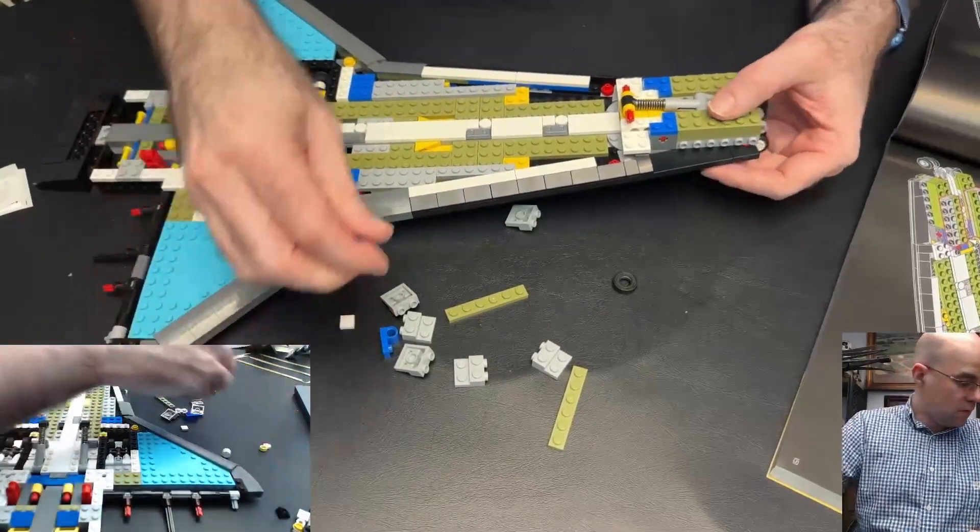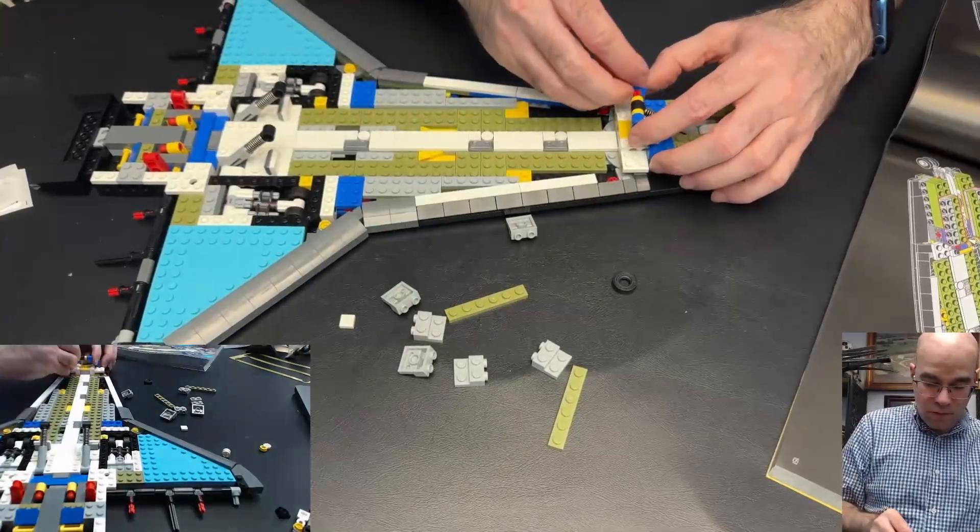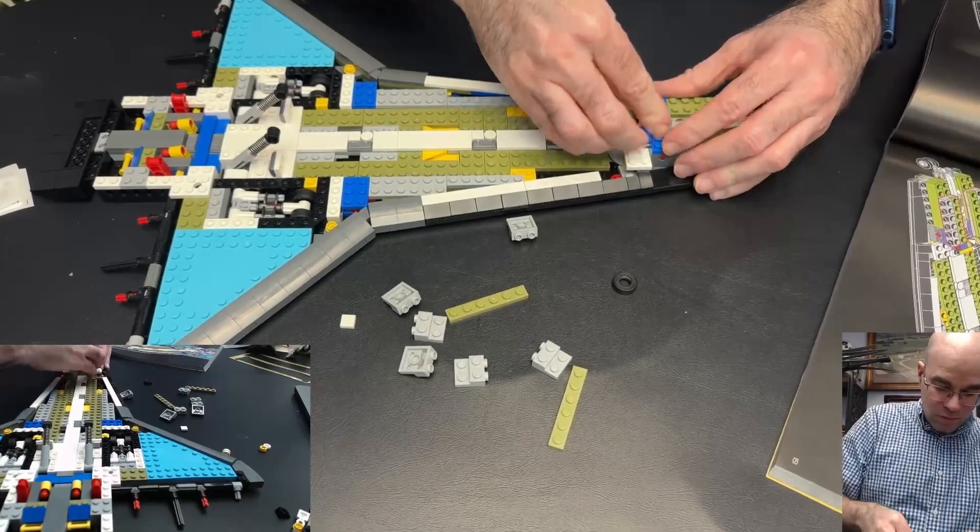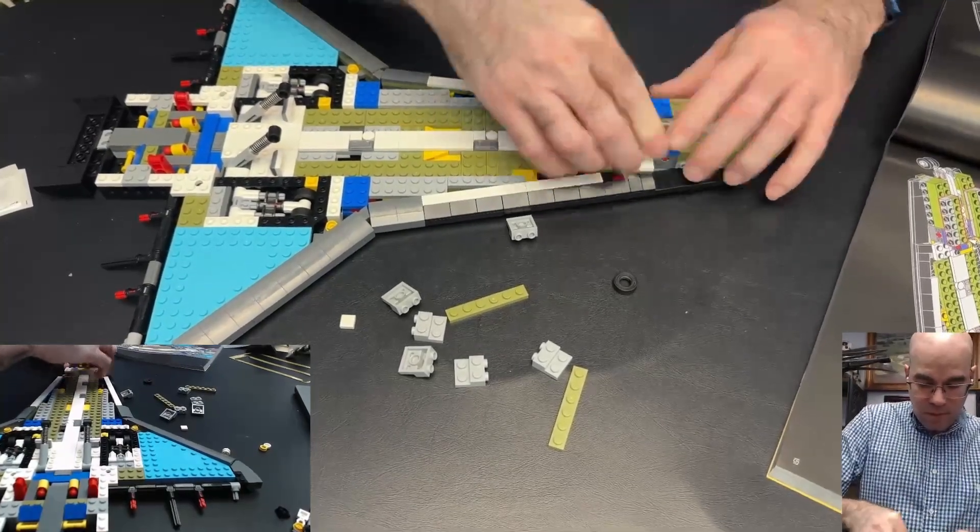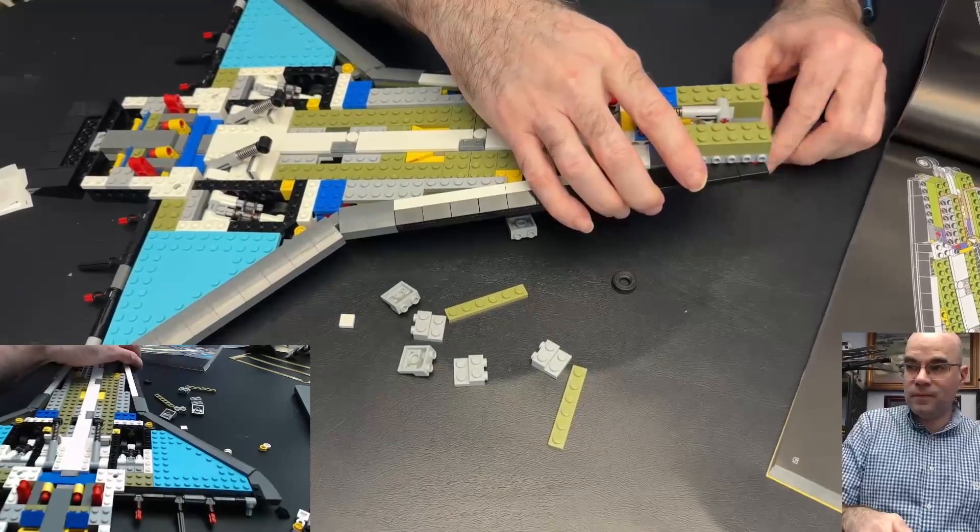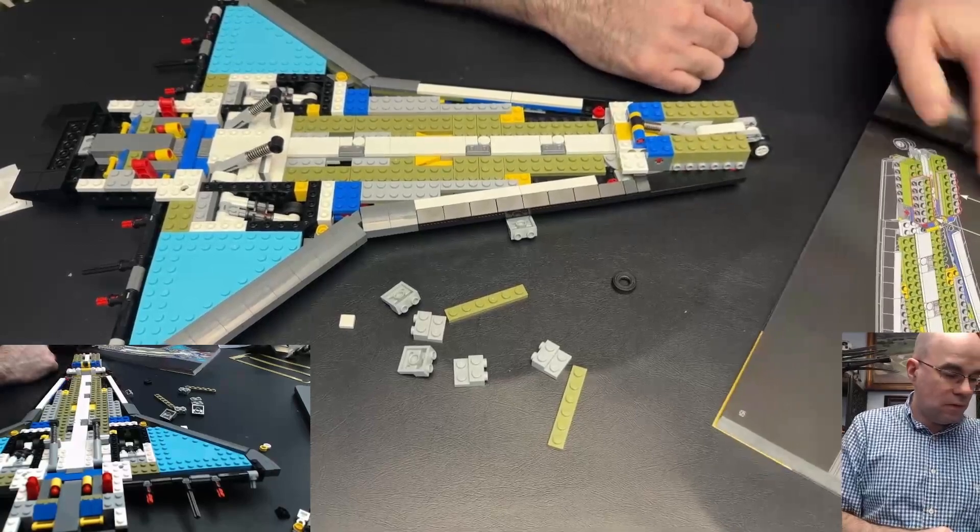And we got two hinge pieces here to go connect the shock absorber to. There we go. Look at that. Okay.